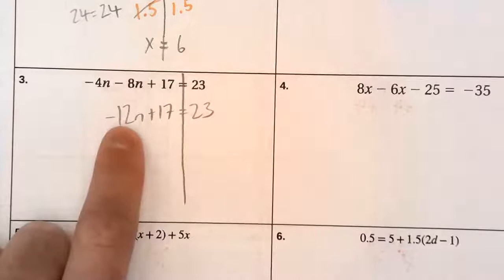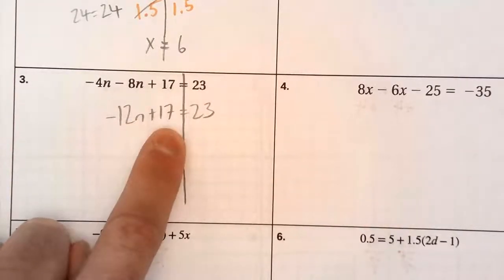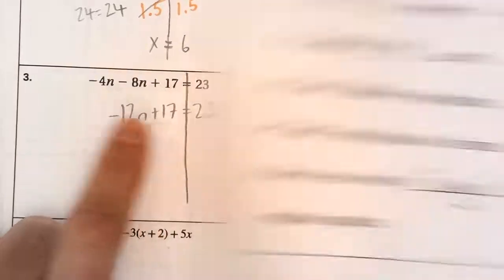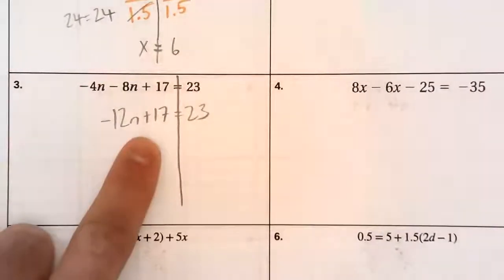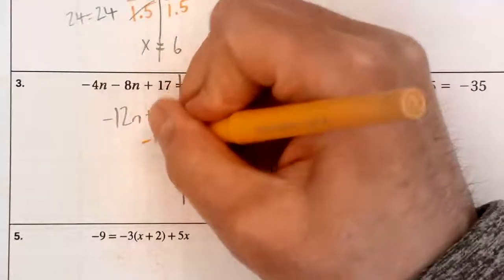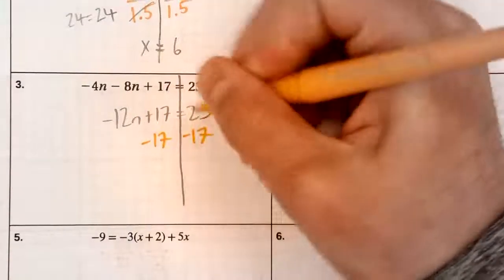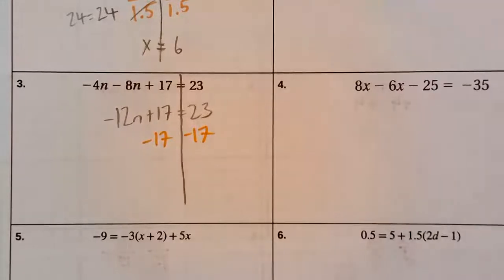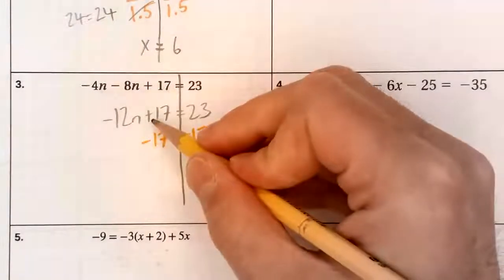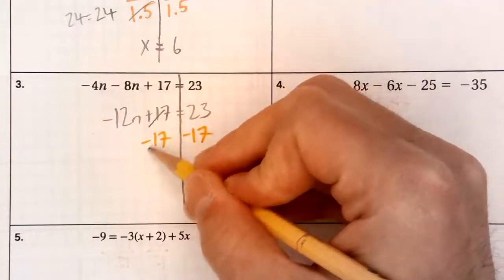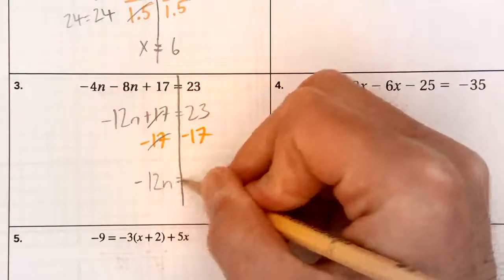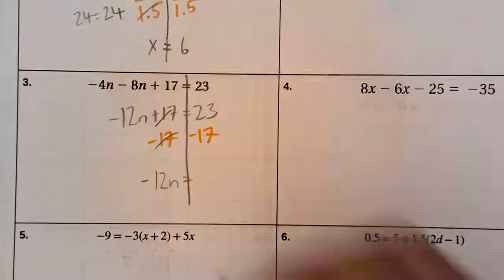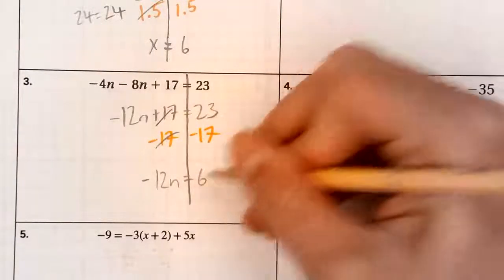Now I have multiplication, negative 12 times n. I also have addition, plus 17. I have to start by undoing the addition and subtraction. So opposite of plus 17 is minus 17. I'm going to do that to both sides. The 17s cancel out, leaving you with negative 12n. 23 minus 17 is 6.